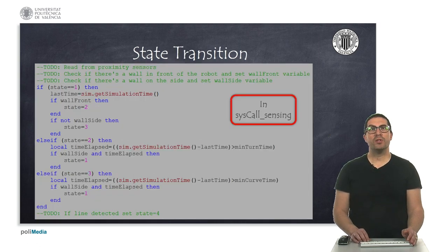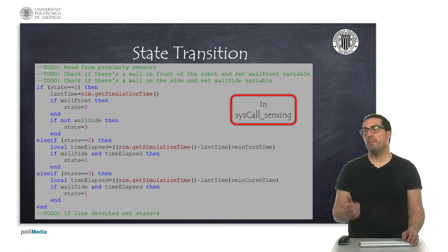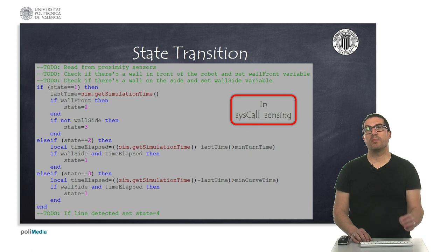To detect the conditions in which the robot changes from one state to another, we will implement those transitions in the syscall sensing function. Here I show you the code to implement, although there are few steps needed to be completed first. In particular, the ones regarding reading proximity sensors. And also, we need to evaluate the conditions, whether if we have detected a wall in front of the robot, or we are detecting a wall on the side. These conditions must be set using the variables wall-front and wall-side. These are Boolean variables.